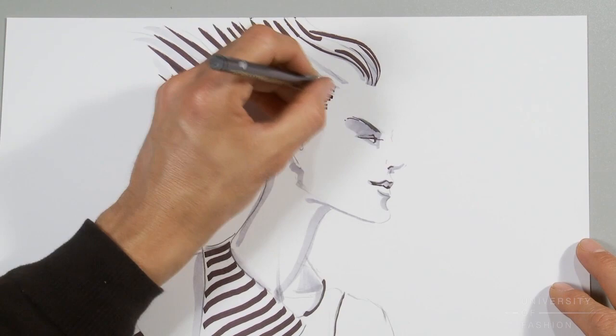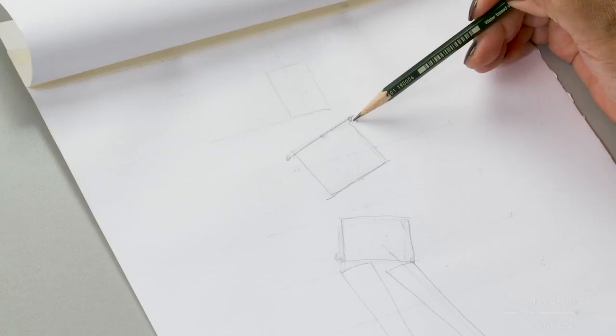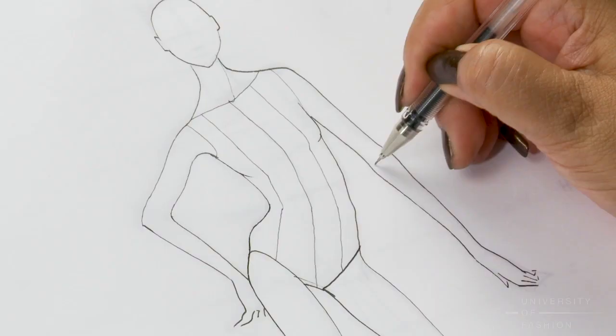Learn how to draw a female contrapposto front. She'll teach you the concepts and then how to map the pose using a nine head figure proportion. You'll learn how to draw the muscles and finally how to ink the figure.